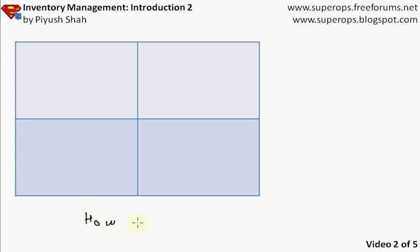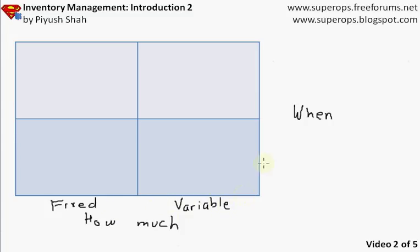Moving to decisions: when I say inventory management, there are two key decisions. Decision one is how much to order, and decision two is when to order. In both cases, my decision can be fixed — I order a fixed quantity or at fixed intervals — or it can be variable, meaning I order a variable quantity or whenever I need it.